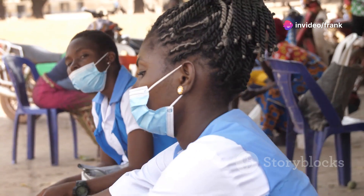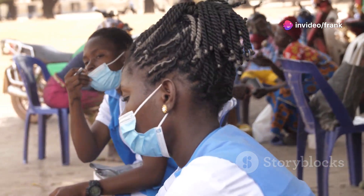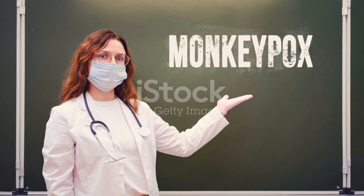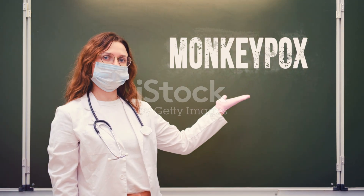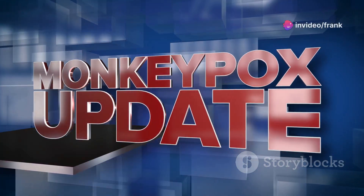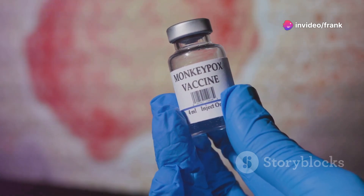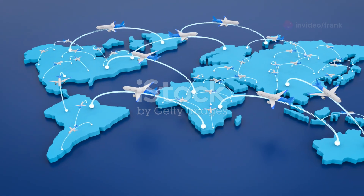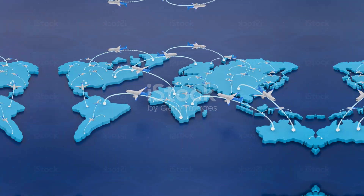Monkeypox. The name itself sounds alarming. Infectious diseases know no borders; they can emerge and spread rapidly. Monkeypox is a viral zoonotic disease — it originates in animals and can spread to humans. The virus belongs to the same family as smallpox and causes a range of symptoms from fever to rash. Our interconnected world allows diseases to spread rapidly.